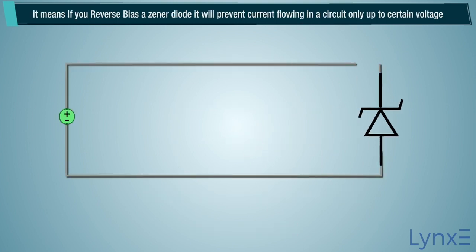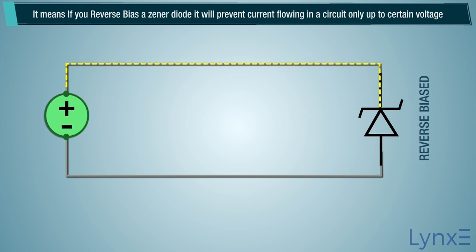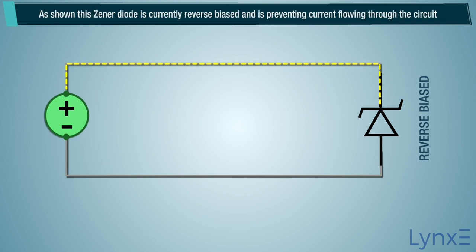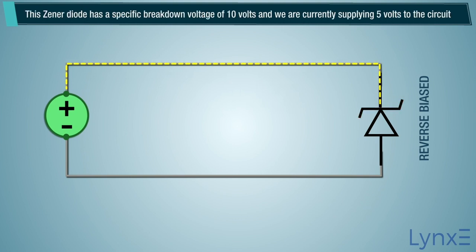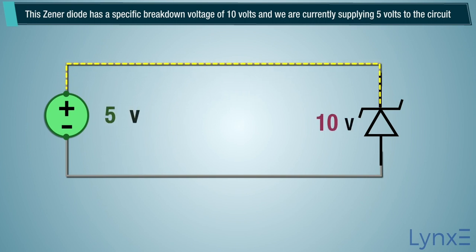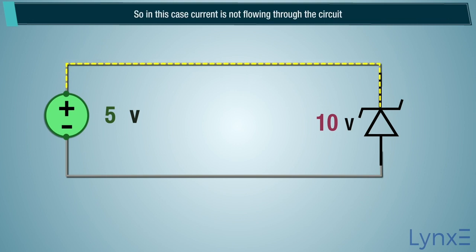It means if you reverse bias a Zener diode, it will prevent current flowing in a circuit only up to a certain voltage. As shown, this Zener diode is currently reverse biased and is preventing current from flowing through the circuit. This Zener diode has a specific breakdown voltage of 10 volts, and we are currently supplying 5 volts to the circuit, so current is not flowing.